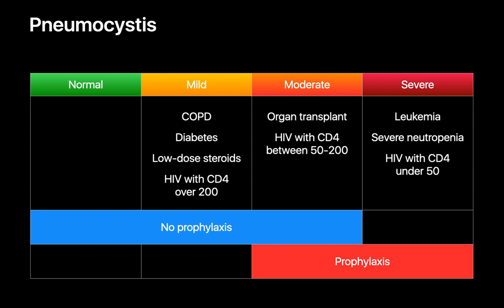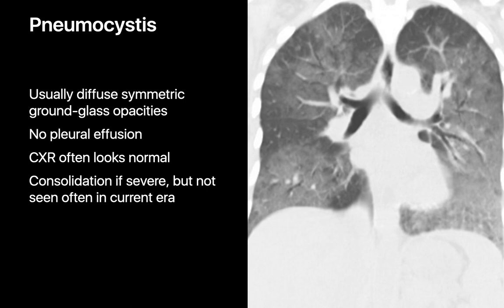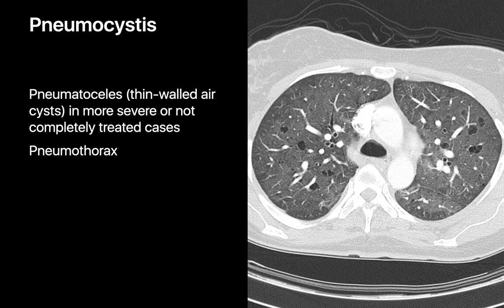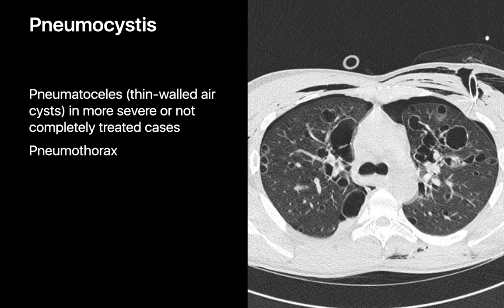Pneumocystis is an opportunistic fungal infection occurring in moderately and severely immunosuppressed individuals, including those with HIV and low CD4 counts, organ transplants, and leukemia — for whom prophylactic regimens are common. PJP infections usually present as diffuse bilateral isolated ground glass lung opacities, with pleural effusions typically absent. Because ground glass opacities are easier to hide on chest radiography than consolidation, chest radiographs can sometimes appear normal. In severe cases, the infection can progress to consolidation. Pneumatoceles can occur in severe or suboptimally treated cases — so-called cystic PJP — putting patients at risk for spontaneous pneumothoraces.